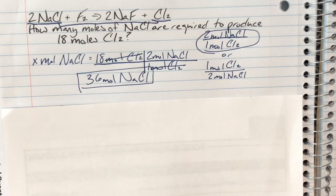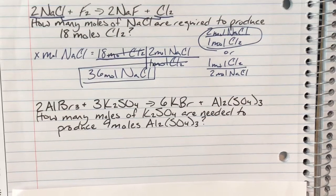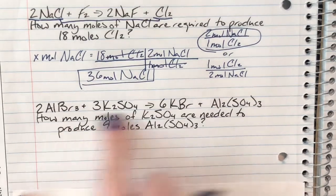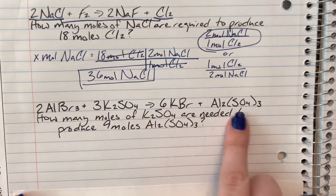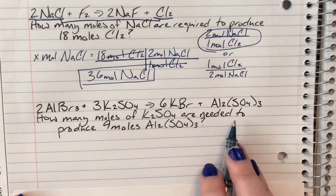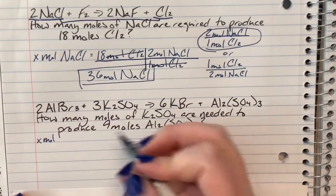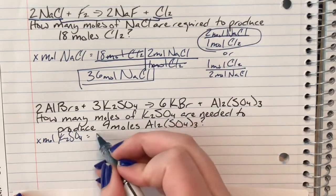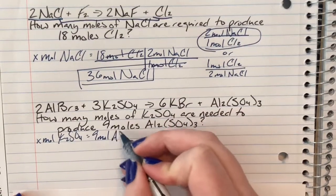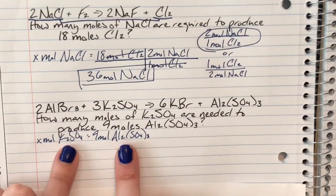Pretty easy once you realize what needs to happen and you have that balanced chemical equation — this is very quick, it's pattern recognition. As long as you know exactly what you're going to need, this is a relatively quick and easy type of problem to solve. Now I have a new balanced chemical equation: aluminum bromide reacting with potassium sulfate, producing potassium bromide and aluminum sulfate. I'll read my question and translate it from English to math — 'how many moles' means x moles, and it says potassium sulfate are needed, with 9 moles of aluminum sulfate given.